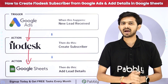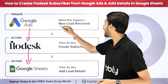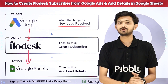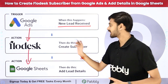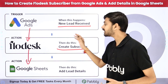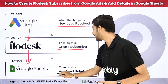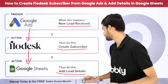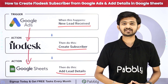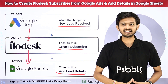With Pabbly Connect, as I receive a new lead through Google Ads, it will automatically first create a new subscriber in Flowdesk, and after creating that subscriber it will add my lead details in my Google Sheets. So let me take you to my computer screen to show how I'm going to build this connection.